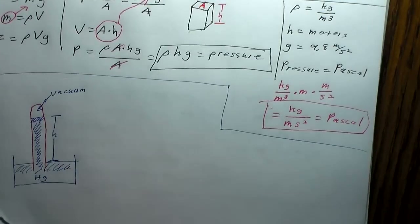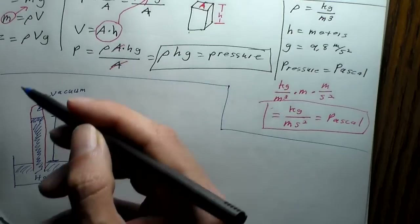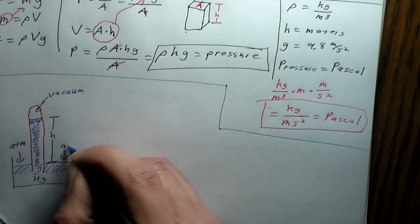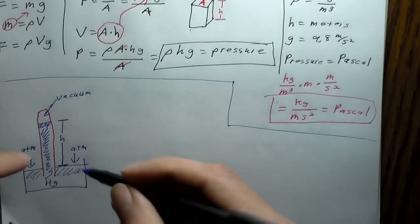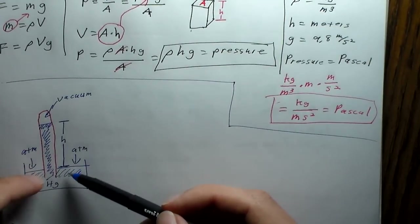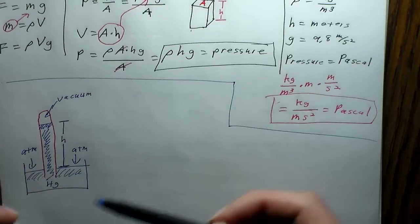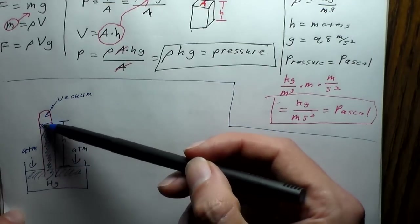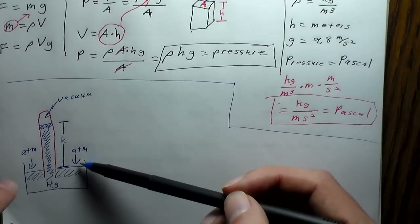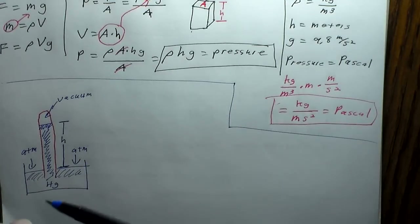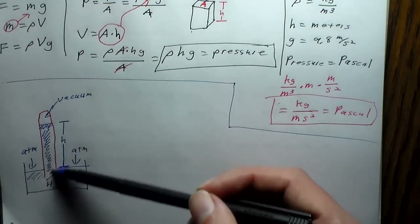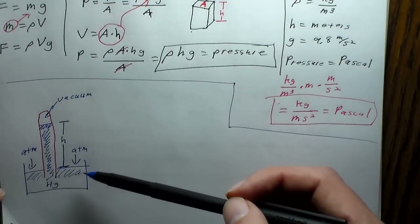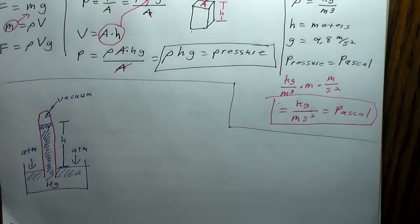If you're swimming in a pool, it doesn't matter how deep the water is below you — all that matters is how much water is above you, and that determines the pressure. So what keeps the mercury suspended is the atmosphere pushing down on both sides. The atmosphere pushes down on the open surface, the mercury gets pushed up into the tube, and eventually reaches a height where the weight of the mercury equals the weight of the atmosphere — equilibrium.